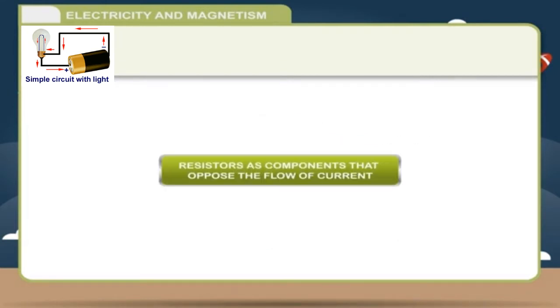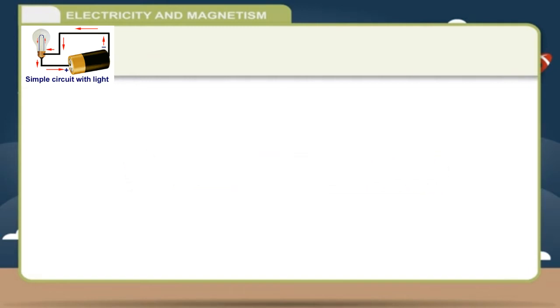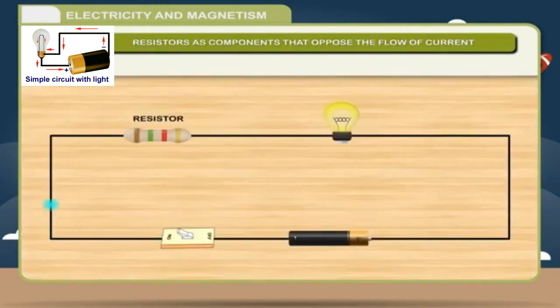It can be seen as a component that opposes the flow of current. When current flows through a conductor, it offers some obstruction to the flow of current. The obstruction by a wire is called its electrical resistance. So resistance is a physical quantity that opposes the flow of current.